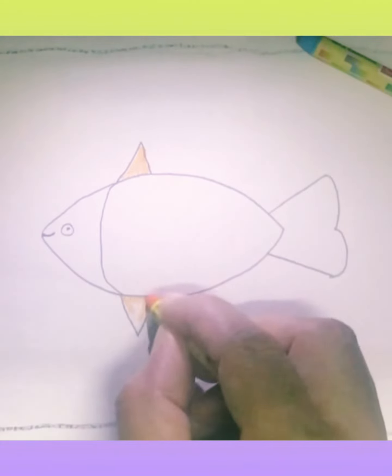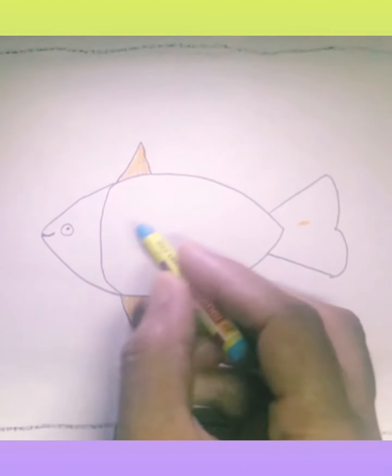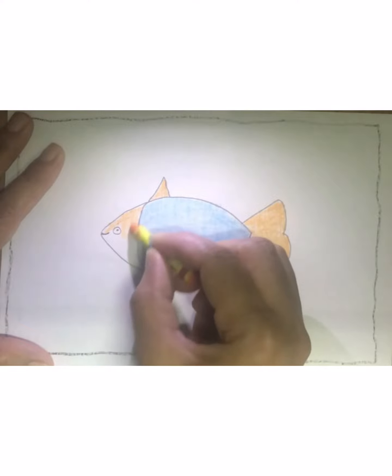In next part doing same orange, and in tail we will do orange color. And for its body I'm doing blue color.